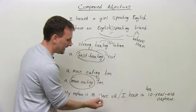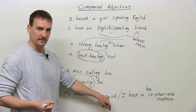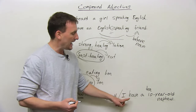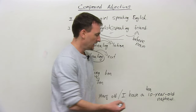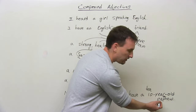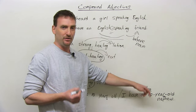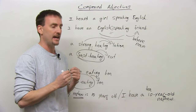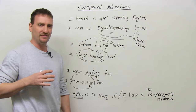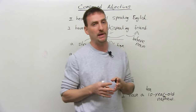This is where people make the most mistakes in writing: 'My nephew is 10 years old' — with the S, no hyphens, after the verb. But 'I have a 10-year-old nephew' — no S, two hyphens, before the noun. Whether you write the number or the word, if it's a compound adjective before the noun, use the hyphens and drop the S.